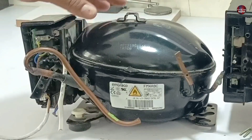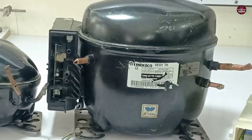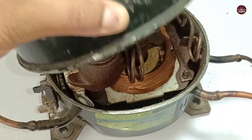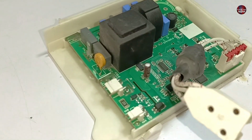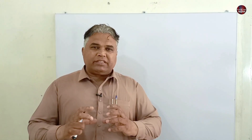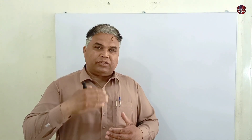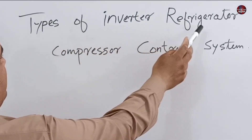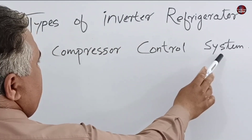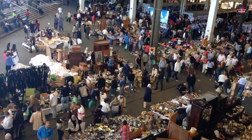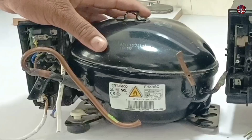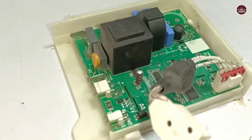I will tell you how many types of compressors are used in inverter refrigerators and how they function. A compressor is an electromechanical device and has different types, which we will discuss in another video. In this video, I will specifically tell you how the control of inverter refrigerator compressors works, and how the compressor is controlled using control boards. Three types of controls are available in the market through which these inverter refrigerator compressors are controlled using a PCB or motherboard.